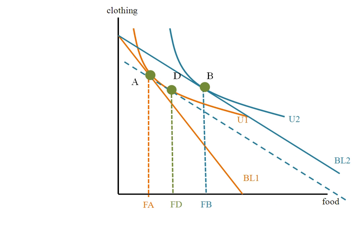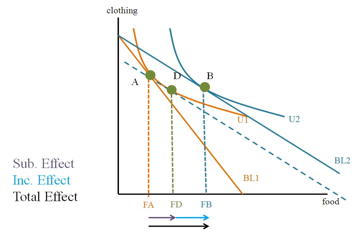Recapping: the substitution effect goes from my initial bundle to the decomposition bundle. The income effect goes from the decomposition bundle to my final bundle. And the total effect goes from my initial bundle to my final bundle.